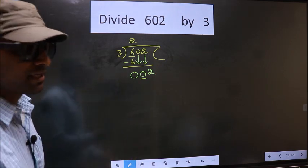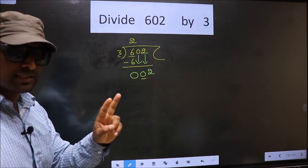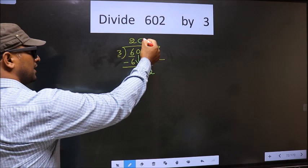Here you should remember: whenever you are bringing down 2 numbers at the same step, definitely you should put 0 in the quotient.